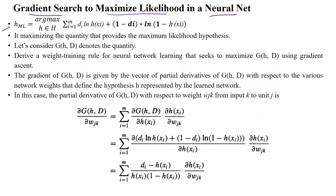From the previous video, we have calculated maximum likelihood — that is, from the set of hypotheses in the hypothesis space that should give you the maximum posterior probability value. This is calculated by minimizing the error, which is: actual output d times log predicted output, plus (1 minus actual output) multiplied with log(1 minus predicted output), which is maximizing the quantity that provides the maximum likelihood hypothesis.